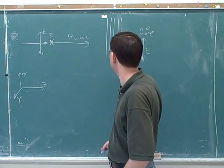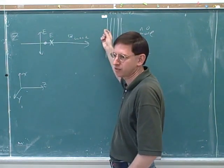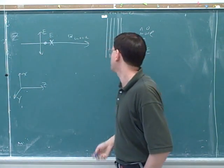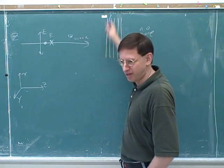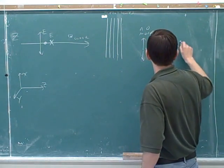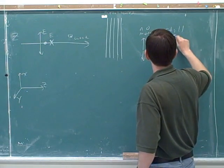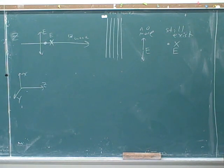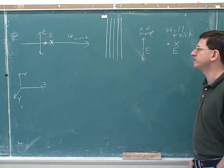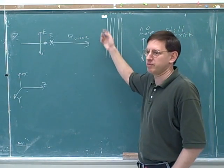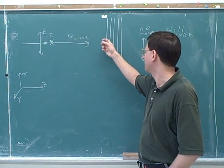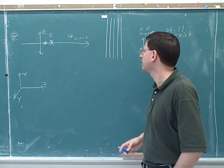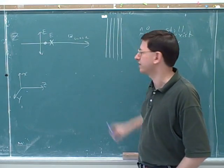However, what about the oscillations going into and out of the board? The only way to cancel those would be for charges to move into and out of the board, but they can't, because the wires are oriented vertically. So those oscillations still exist after passing through the wires. The conductor can't cancel out the in/out oscillations because the charges can only move up and down along the wires — they can't move in that perpendicular direction.